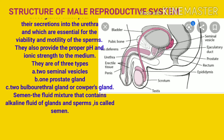Two seminal vesicles, one prostate gland, and two bulbo-urethral glands or Cowper's glands secrete an alkaline fluid. This alkaline fluid provides nutrition and motility medium for the sperms and helps to neutralize the acidic medium of the vagina. In this way we can understand the functioning of the accessory glands.